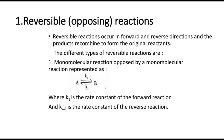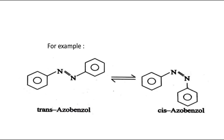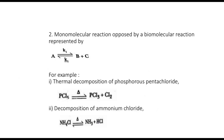This is about interconversion of A to B. When A gets converted into B, that is the forward reaction, the rate constant of which is denoted as K1. And when B is converted back to A, that is the reverse reaction with rate constant K-1. An example is trans-azobenzene being interconvertible to cis-azobenzene — one molecule on both sides, so both are monomolecular. In the trans case, the two benzene rings are in two opposite planes, whereas in cis, the two benzene rings are in the same plane.